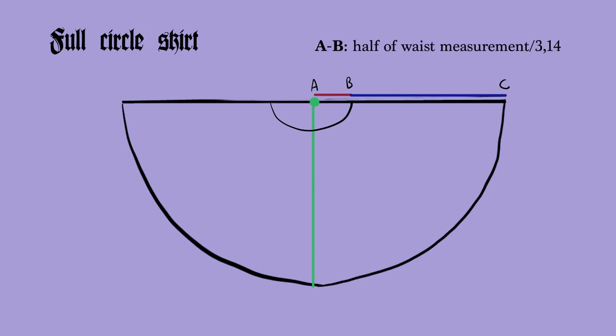For the circle skirt pattern you need to know the radius of your waistline and the length of your skirt. For the radius you need to measure the circumference of your waist or where the skirt will sit and divide that number by two. Then you should divide that number by 3.14 and you have your radius.